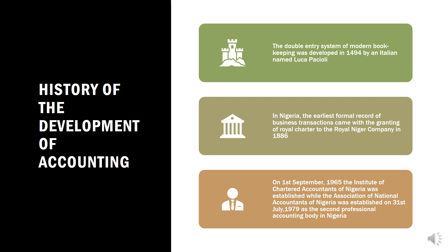Now let's look at the history of the development of accounting. The double-entry system of modern bookkeeping was developed by an Italian man named Luca Pacioli in 1494. In Nigeria, the earliest formal record of business transactions came with the granting of a Royal Charter to the Royal Niger Company in 1886. The Institute of Chartered Accountants of Nigeria was established on the 1st of September 1965.